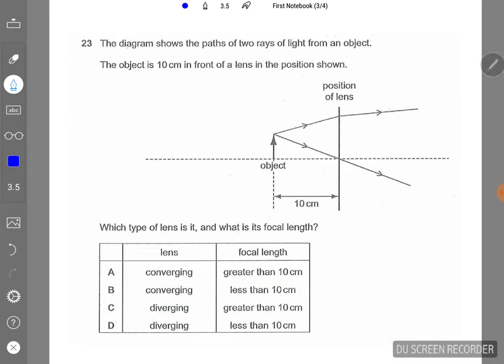One glance at this question, a lot of students have the misconception thinking that this lens here is a diverging lens. Because of these two rays, they actually open up, they do not converge to a point.